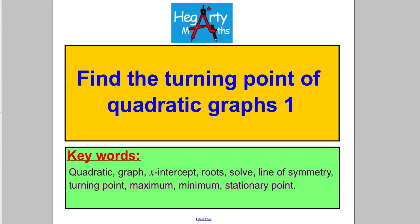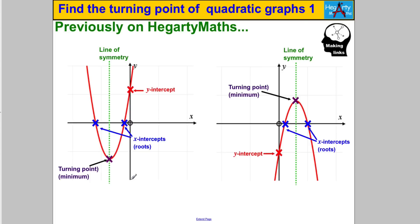Welcome to another video from Hegarty Maths. In this video we're finding the turning points of quadratic graphs. Let's look at the key features of graphs we've already learned about. We've already learned how to find the y-intercept by making x equal 0, and we found the x-intercepts by making y equal to 0. We found the line of symmetry as halfway between the two roots or the two x-intercepts.